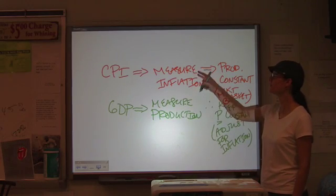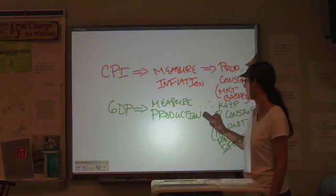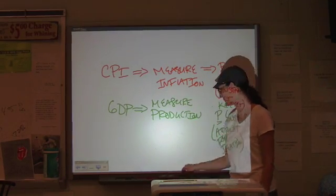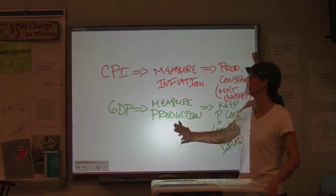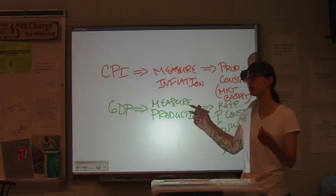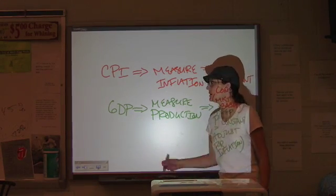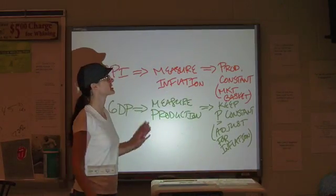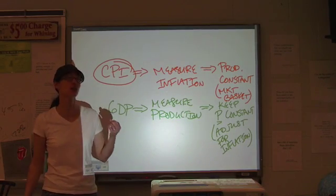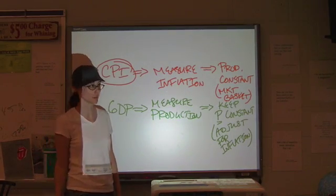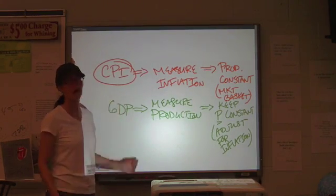Both of these measures, CPI and GDP, we use both these calculations because we're getting at different data. For CPI, we want to see what are the changes in consumer prices over time because inflation can be very damaging to an economy. We want to try to make adjustments for that. It helps us with policy decisions.